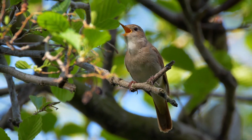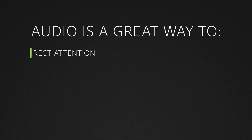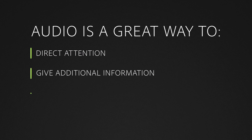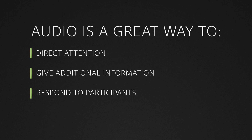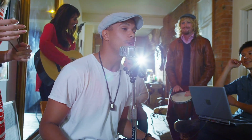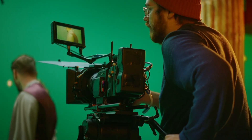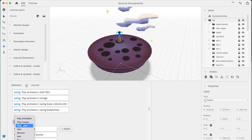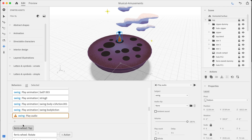Audio is a great way to direct attention, to give additional information about objects or an environment, to respond to participants when they interact, or of course to bring emotion to a piece — audio is a shortcut to the heart. Musicians and filmmakers have known this for a long, long time, but we need to bring those lessons into spatial design as well. In later videos, I'll go over different techniques for creating spatial audio using Adobe Aero.